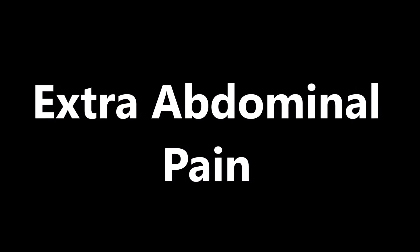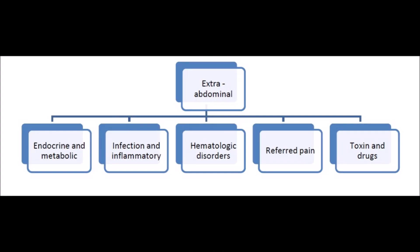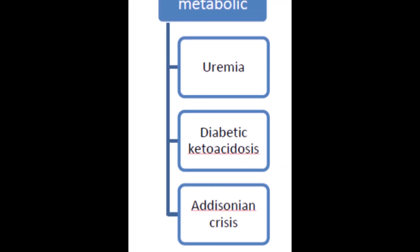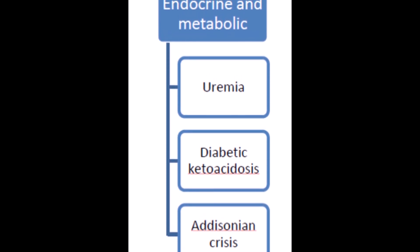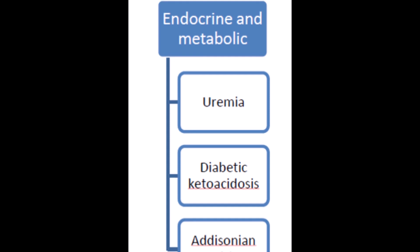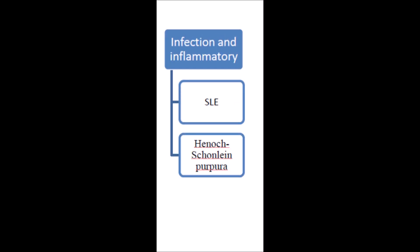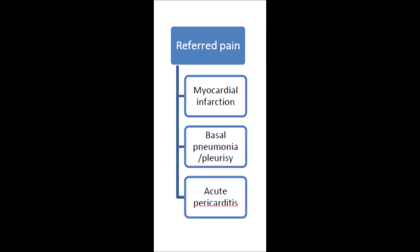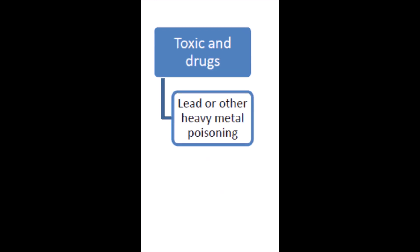Extra-abdominal causes of acute diffuse abdominal pain include endocrine and metabolic causes, infections and inflammatory conditions, hematological disorders, referred pain, and toxins and drugs. Endocrine and metabolic causes include uremia, diabetic ketoacidosis, and Addisonian crisis. Infections and inflammatory causes include systemic lupus erythematosus and Henoch-Schönlein purpura. Hematological causes include acute leukemia. Referred pain may come from myocardial infarction, basal pneumonia, pleurisy, or acute pericarditis. Toxins and drugs include lead or other heavy metal poisoning.